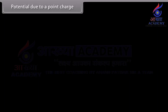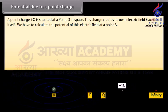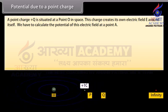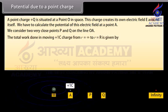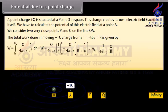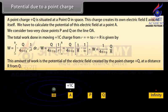Potential due to a point charge: A point charge plus Q is situated at point O in space. This charge creates its own electric field E around itself. We have to calculate the potential of this electric field at point A. We consider two very close points P and Q on the line OA. The total work done in moving plus one coulomb charge from infinity to point R is given by W equals 1 upon 4πε₀ multiplied by Q upon R. This is the potential of the electric field created by point charge plus Q at a distance R from Q.